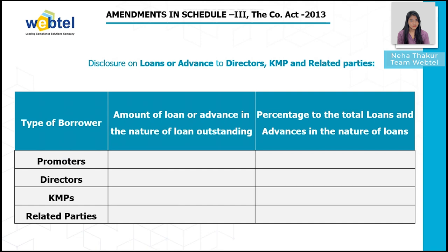The next amendment is disclosure on loans and advances to directors, KMPs, and related parties. The following disclosure shall be made where loans or advances in the nature of loans are granted to promoters, directors, KMPs, and related parties as defined under the Companies Act 2013, either severally or jointly with any other person, that are repayable on demand or without specifying any terms or period of repayment.